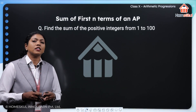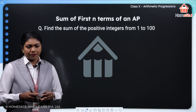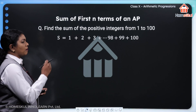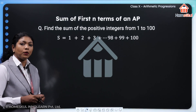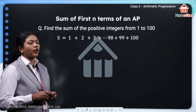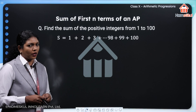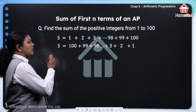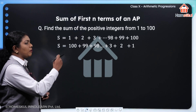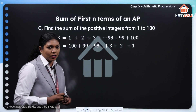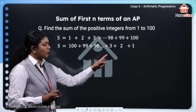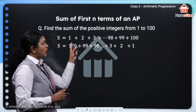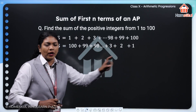Now we are going to discuss how to find the sum. Sum of 1 to 100 means 1 plus 2 plus 3 plus etc. up to 100. We are going to find it in a different way. I'm going to write it in reverse order as sum S equals 100 plus 99 plus 98 plus etc. up to 3 plus 2 plus 1.